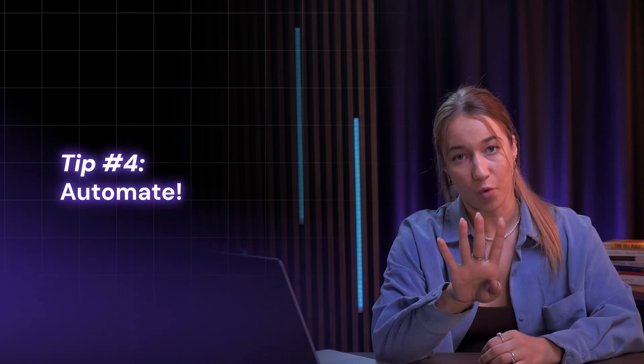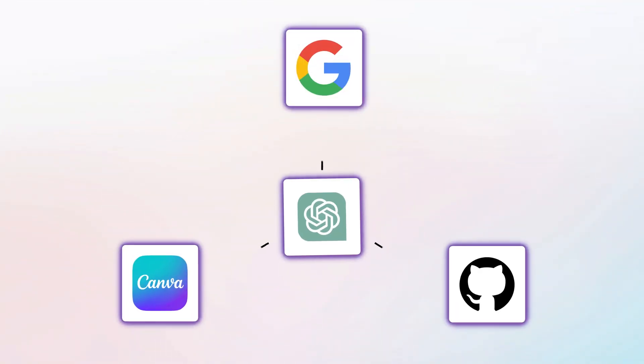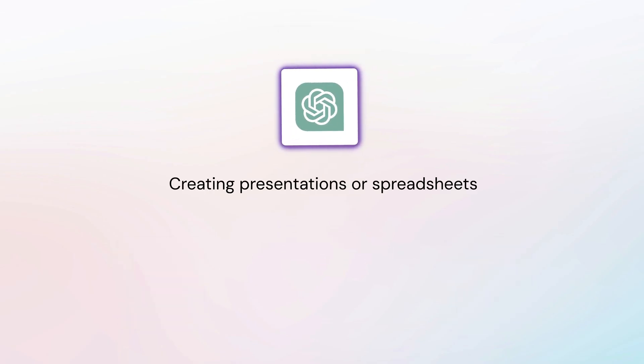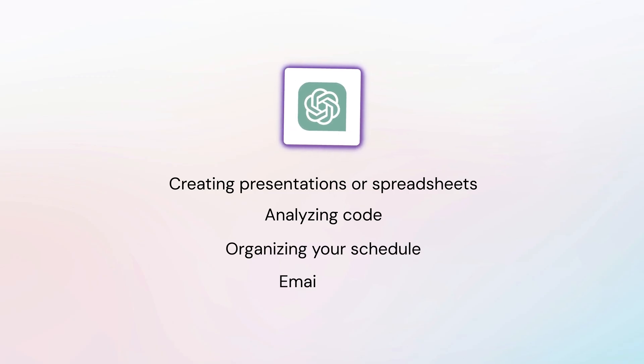Tip number four is automating. With the sources menu, you can sign into your accounts on other websites like Google, Canva, or GitHub so that ChatGPT can pull data from those sources directly. This is especially helpful for things like creating presentations, spreadsheets, analyzing code, organizing your schedule, or just organizing your email inbox. Rather than just uploading documents, you can ask Agent Mode to look into them for you directly from ChatGPT, and it can really handle all the boring stuff for you.